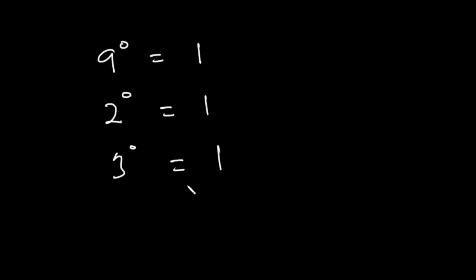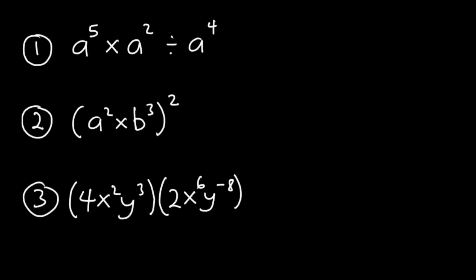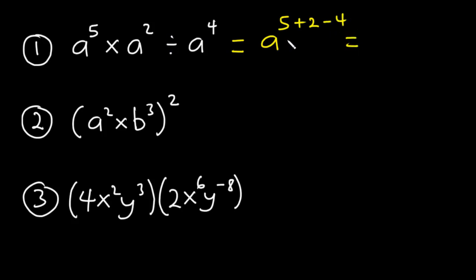Now let's solve some examples. In the first example, we have a exponent 5 times a exponent 2, divided by a exponent 4. We add the exponents for multiplication: 5 plus 2, then subtract 4 for division. 5 plus 2 is 7, and 7 minus 4 is 3. So the answer is a exponent 3.